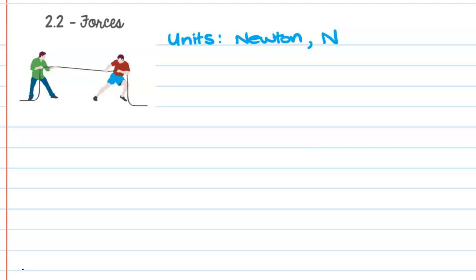When we name a unit of measurement after a person, we tend to use a capital for the shortening, so that's why it's a capital N for newtons. Newtons are a derived unit, so one newton is equivalent to, in our SI units, one kilogram metre per second squared. We'll explore why that is the case. It's a good idea when you're learning about units to have a baseline feeling of what one of those units represents.